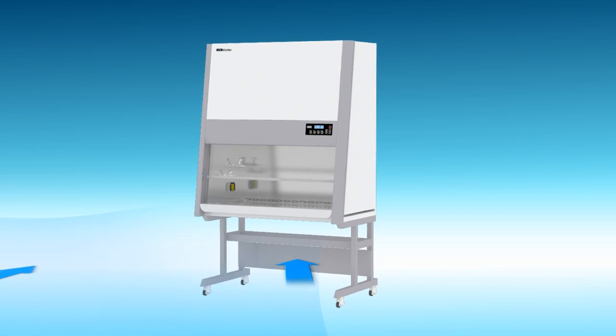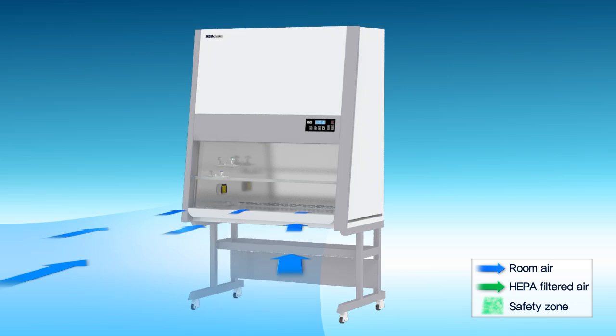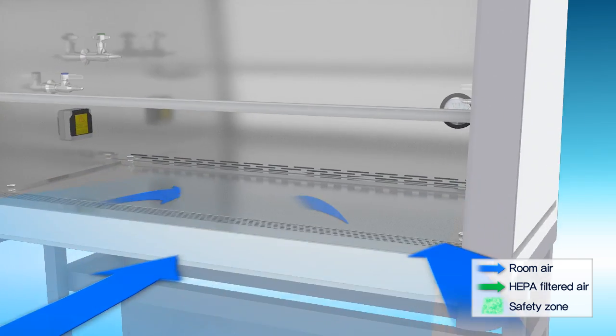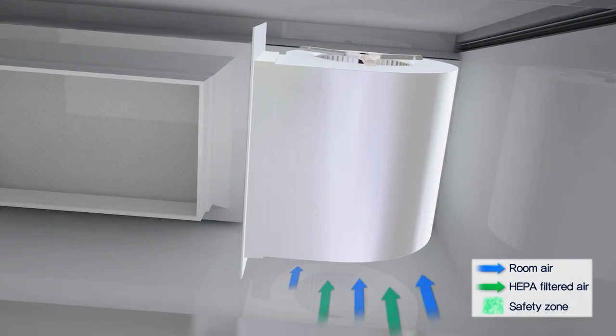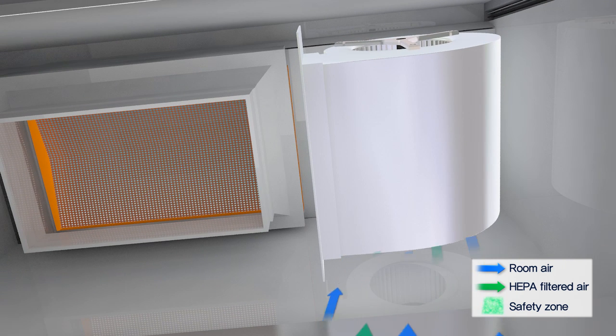As the blower, which is basically built into upper part of the cabinet operates, the room air enters inside the cabinet through intake grill. The incoming air moves to the plenum located on the backside through underneath work surface and rises up to the blower.